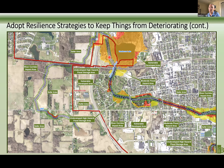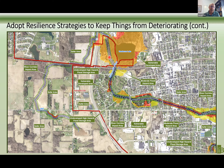A question was asked about the term freeboard. Freeboard is a term used to signify a safety factor. In the case I used it, we have a base elevation called the 100-year elevation. In the state of Indiana, instead of building at that elevation, the state requires two feet of safety factor — because of unknowns in the calculations and other impacts we need to give ourselves a cushion. That two feet is what we call the freeboard.